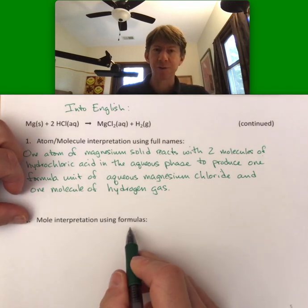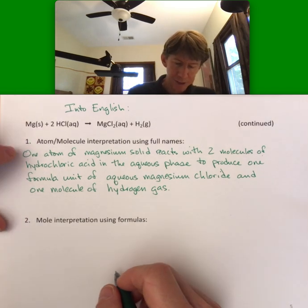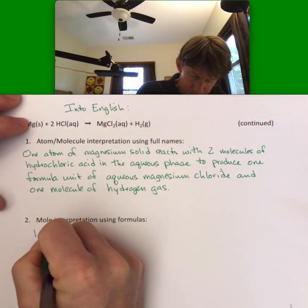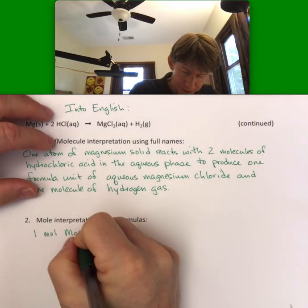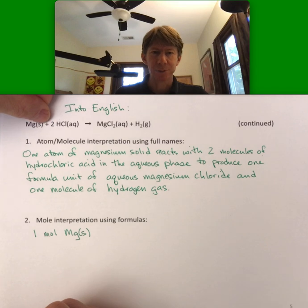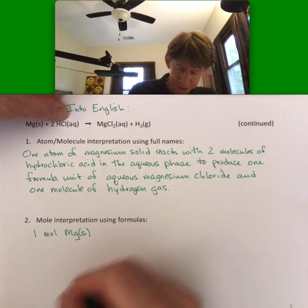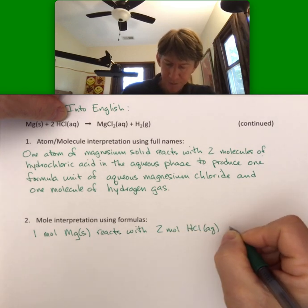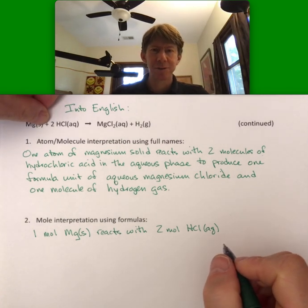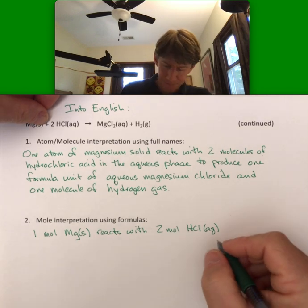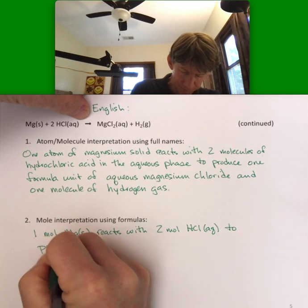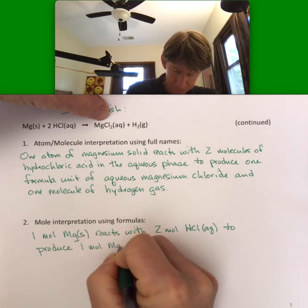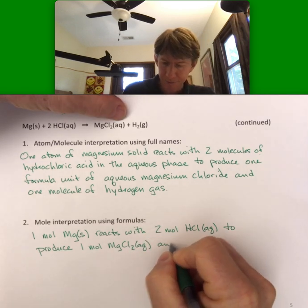Now let's do the mole interpretation using formulas. Again, both of which will be asked for on the homework. In the mole interpretation, it's now one mole of magnesium solid reacts with two moles of HCl aqueous. And you only have to use the phases if they're given. If they're not given, which will be the case on the homework, don't worry about phases. To produce one mole of magnesium chloride aqueous and one mole of hydrogen.